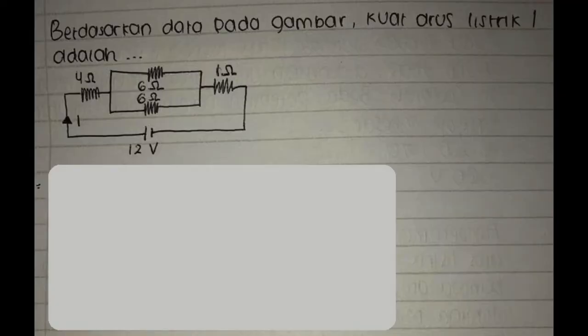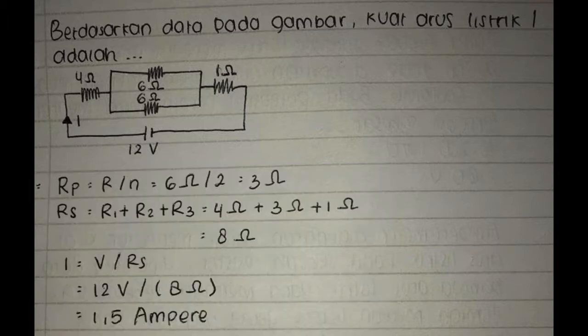Soal 2: Berdasarkan data pada gambar, kuat arus listrik I adalah? Jawaban: Rp sama dengan R per N sama dengan 6 ohm per 2 sama dengan 3 ohm. Rs sama dengan R1 plus R2 plus R3 sama dengan 4 ohm plus 3 ohm plus 1 ohm sama dengan 8 ohm. I sama dengan V per Rs sama dengan 12V per 8 ohm sama dengan 1,5 ampere.